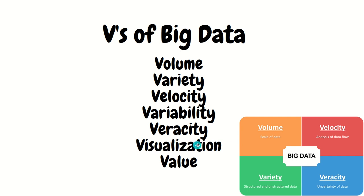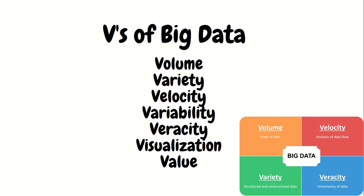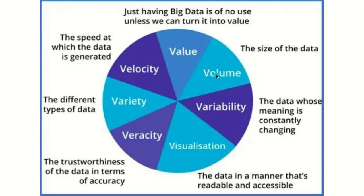The sixth V is Visualization: everything is important only until you can reach a conclusion and present it properly. If you can't present your findings in the form of graphs and charts, all your hard work may go to waste — especially for CEOs who just want to see results visually. The seventh V is Value: if you're deploying hardware, software, and professionals but not generating revenue or insight from it, it is of no use. At the end, value is what matters.